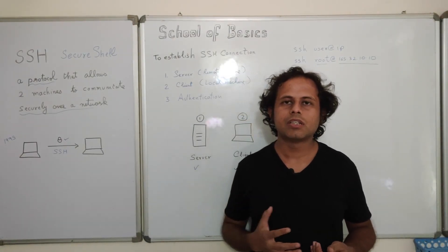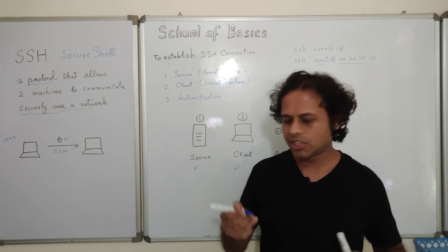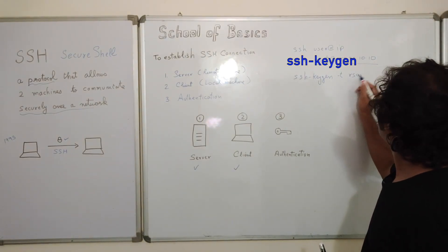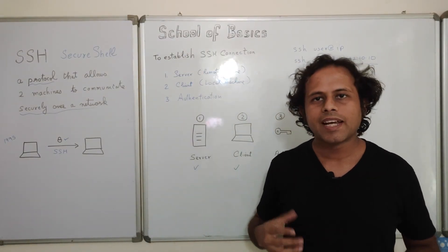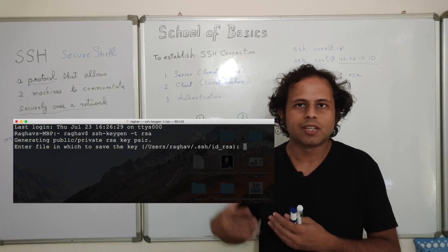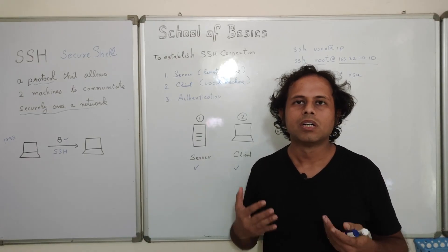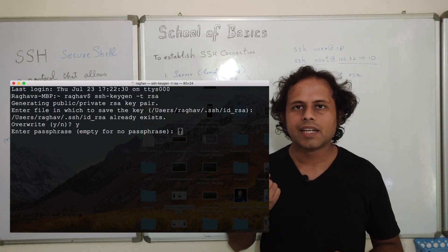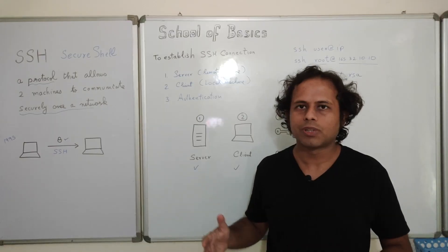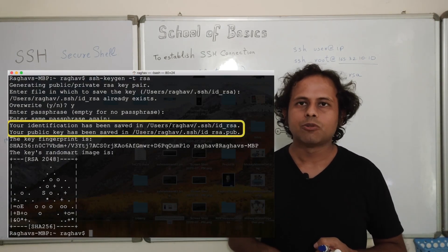For authentication using public and private keys, from your client machine you run the command ssh-keygen — you can also specify the type, such as RSA. When you run ssh-keygen, it will ask where to store the keys and what filename to give them. You can provide a specific name or hit Enter for the default. It will also prompt you for a password to protect your private key — you can set one for extra security or skip it. This creates two keys: a public key and a private key on your system.